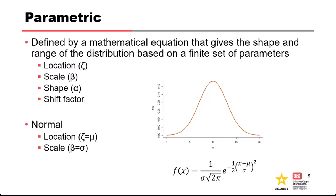If you wanted to add a shift to a normal distribution, you would add or subtract a term to the X value, which would shift the distribution left or right. That's what a shift factor does in terms of defining a distribution. The equation shown is for a normal distribution with mean mu and standard deviation sigma.